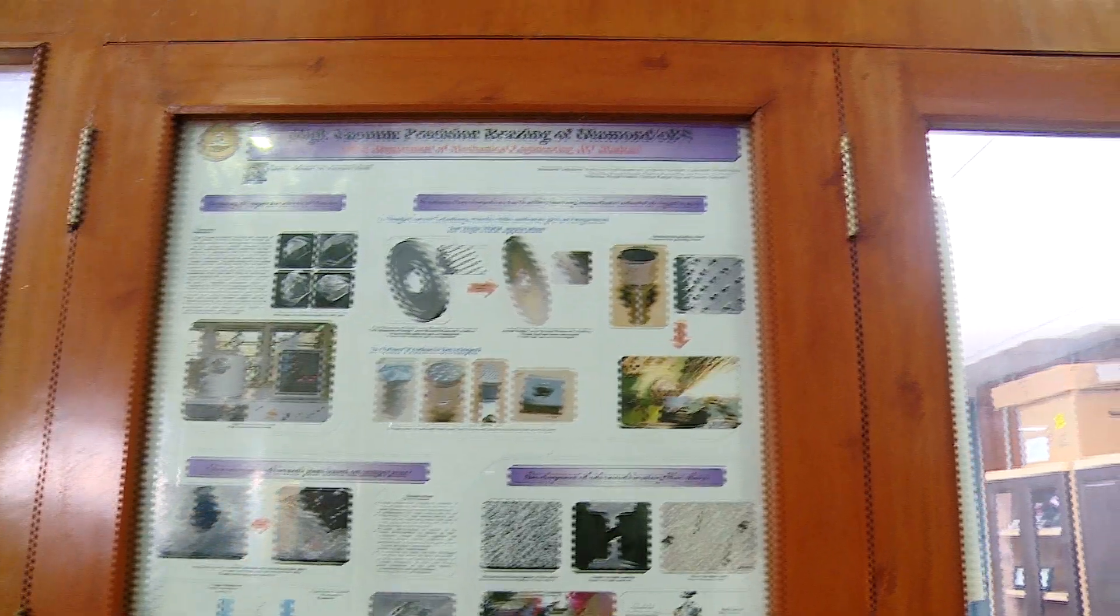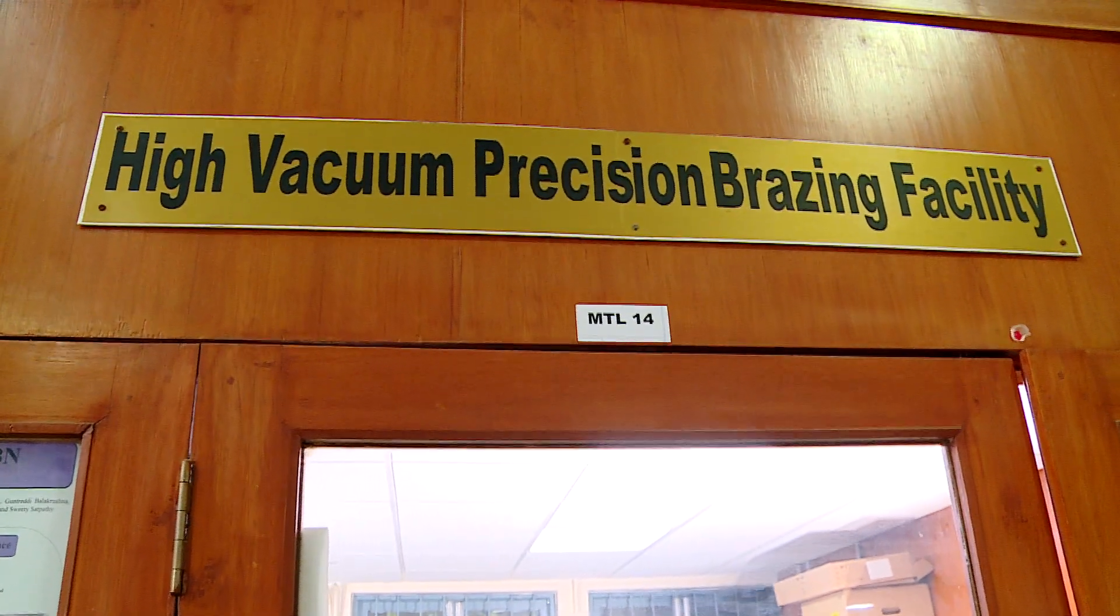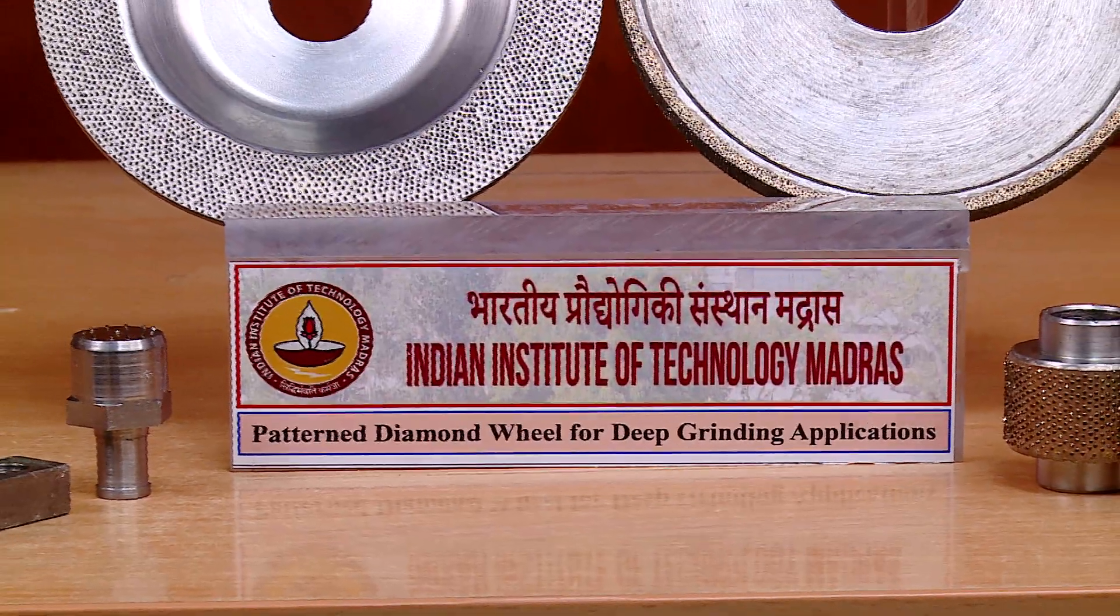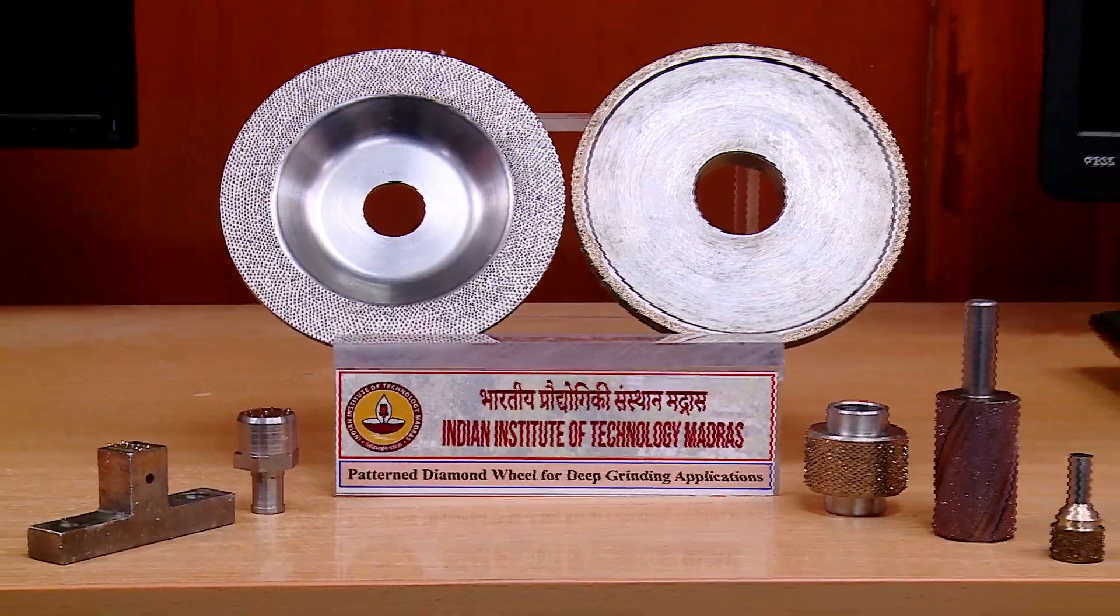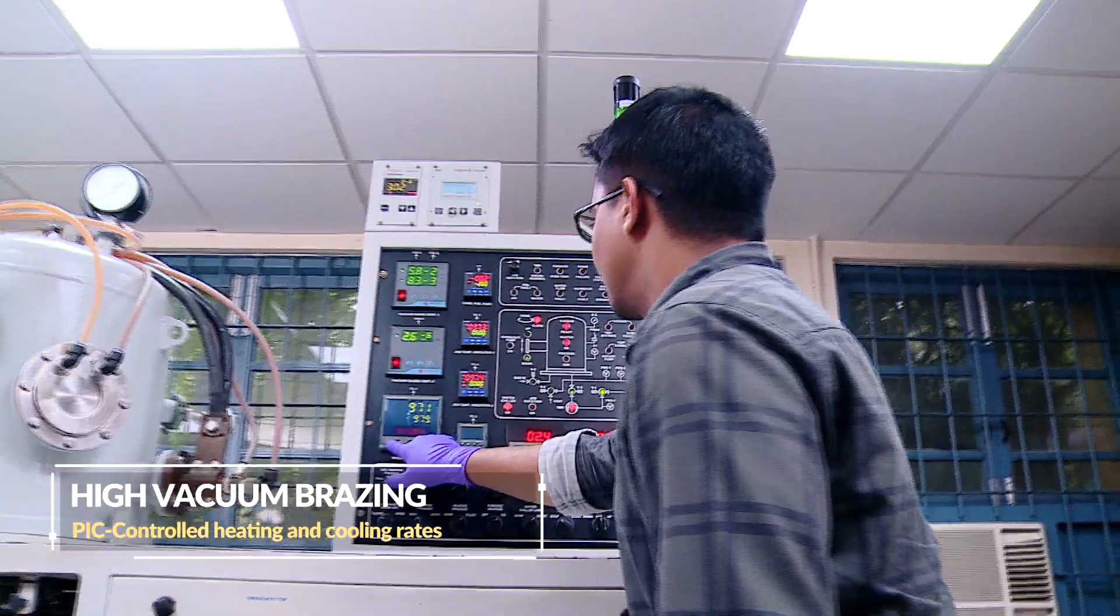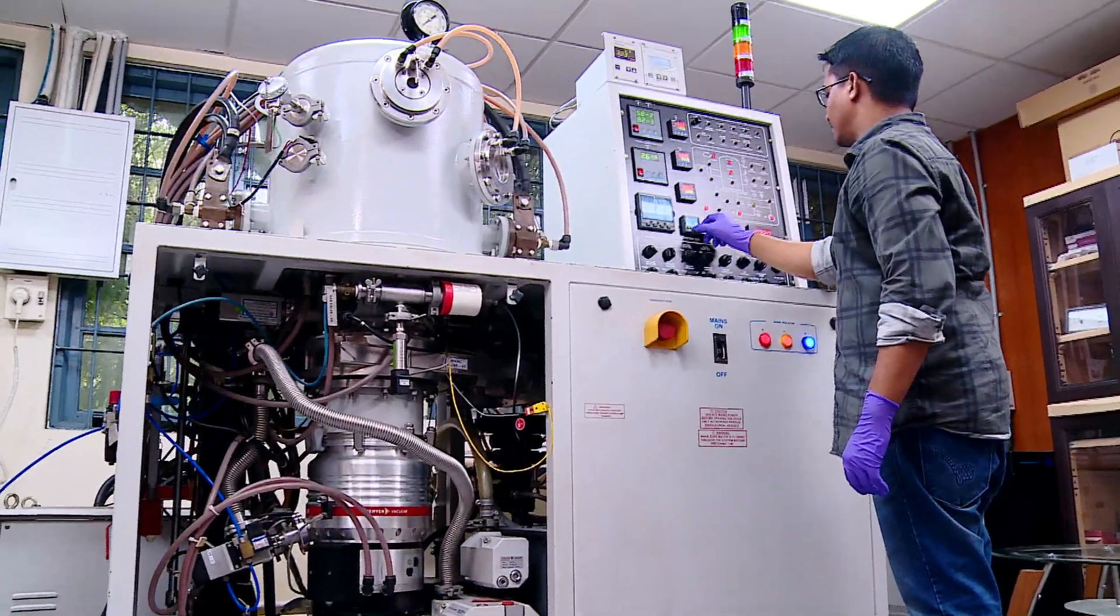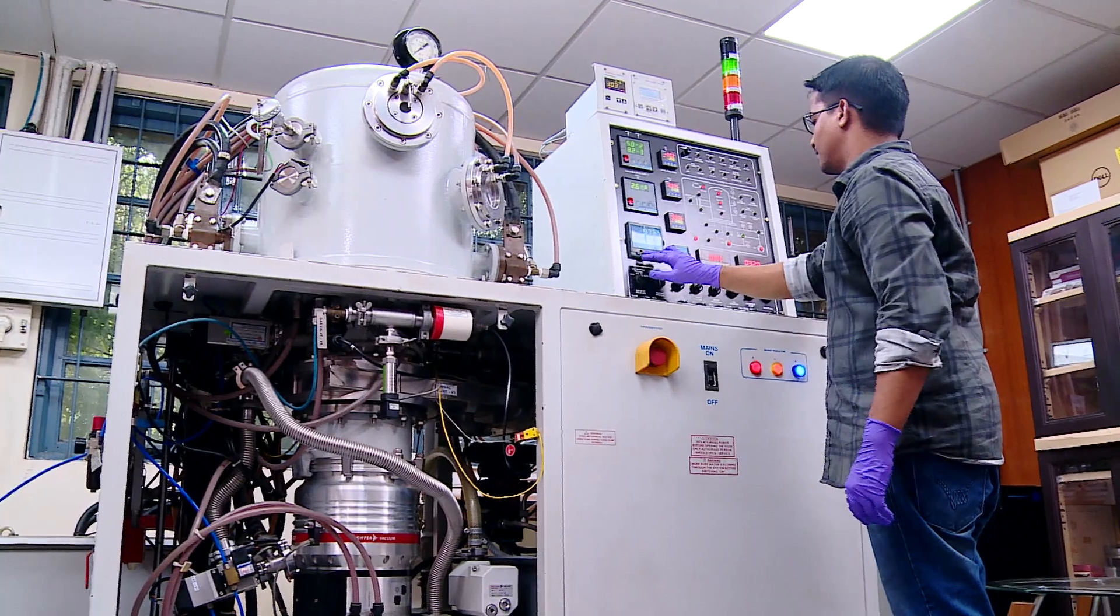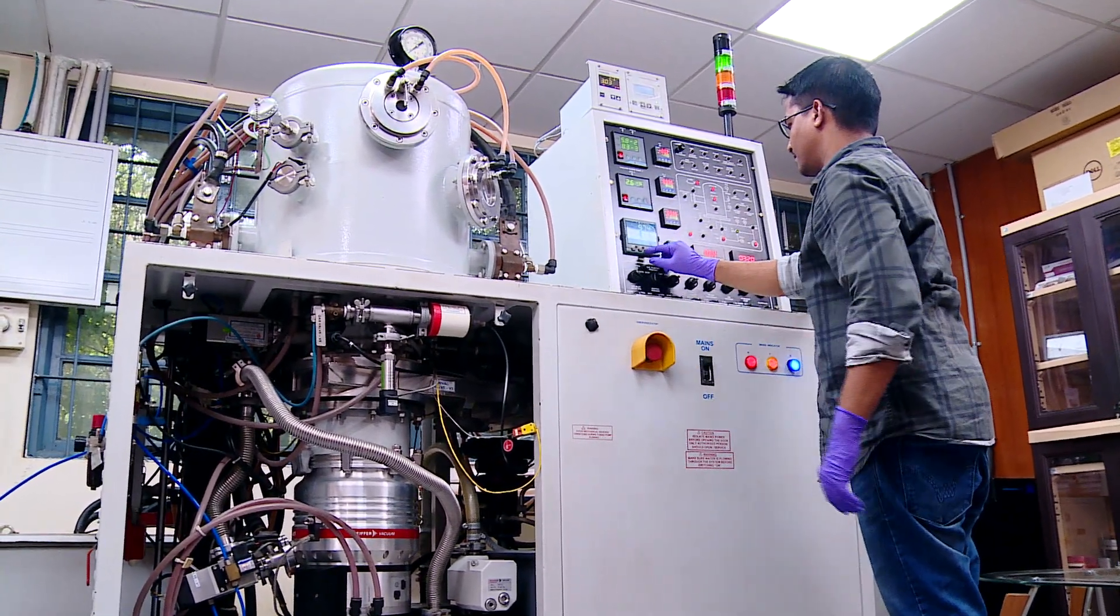The joining group works primarily on active brazing and solid-state joining technologies including row bonding and friction-based joining. One such joining technology is state-of-the-art high vacuum brazing to form high-quality metal ceramic and metal-metal joints. The equipment has capability to process at 1,200 degrees Celsius with PID controlled heating and cooling rates.